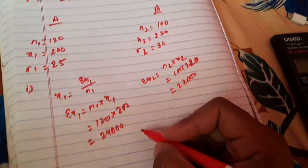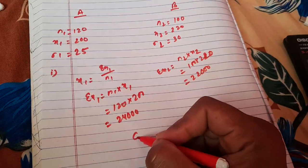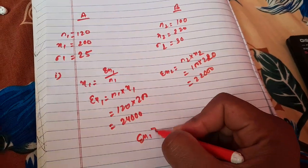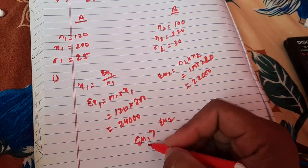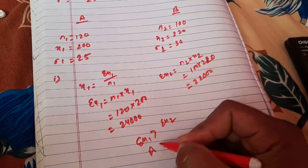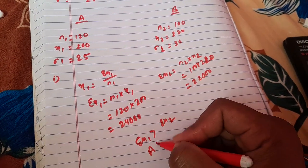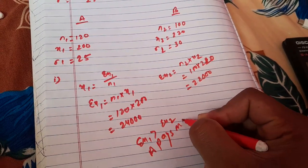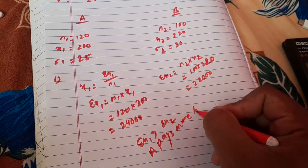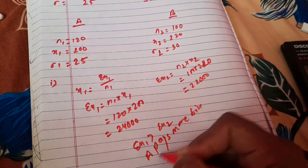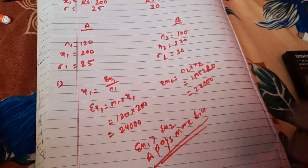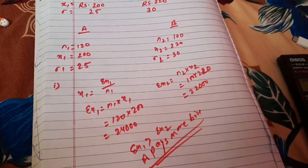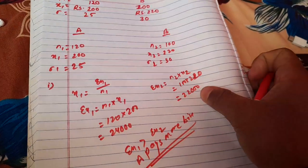Since summation x1 (24,000) is greater than summation x2 (22,000), Factory A pays the larger wage bill. That is the answer to the first question.